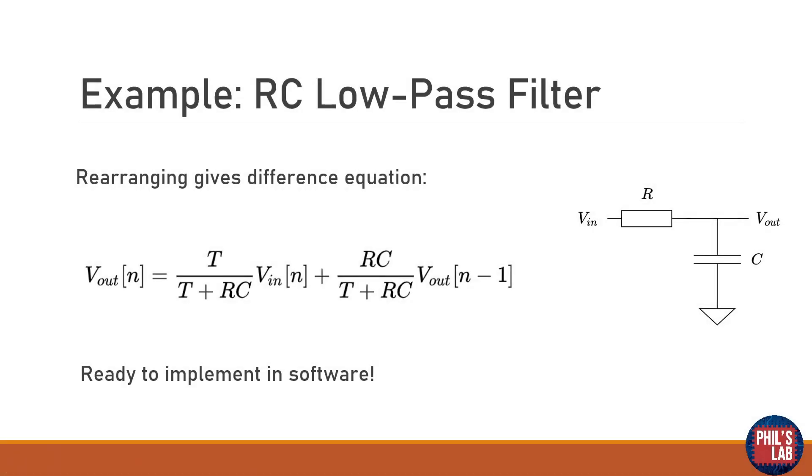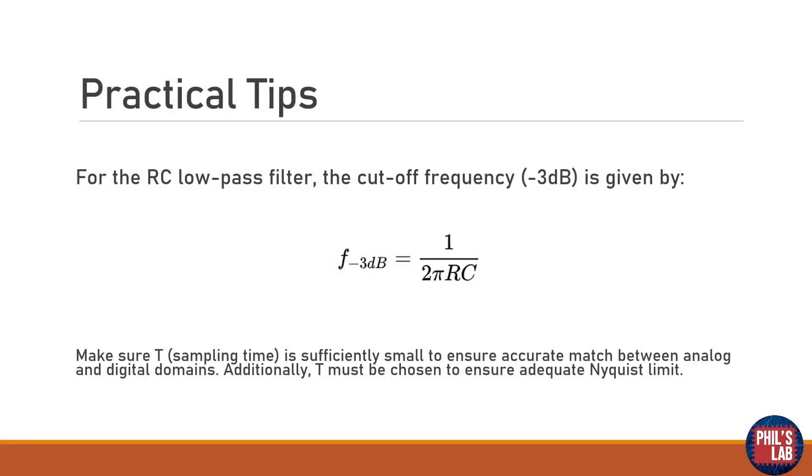Now we can rearrange that difference equation so we get the output of the filter is something times the input to the filter plus something times the previous output of the filter. And this is a really simple linear difference equation. So the output is dependent on the current input and the previous output sample. So it's kind of a recursive filter and this is actually known as an IIR filter. And I'll go into far more detail into this in an upcoming video. But effectively this is all we need to then implement this in software. So it's really neat. All we need to know are the sampling time, the RC constant, the current sample, we just store the previous sample and then we can compute the next output sample. And this is how we can emulate or simulate this analog filter in software.